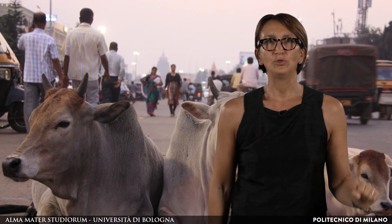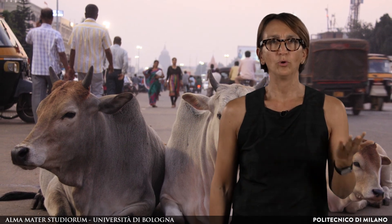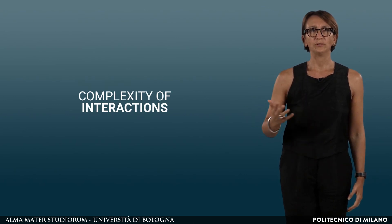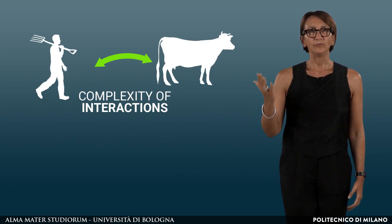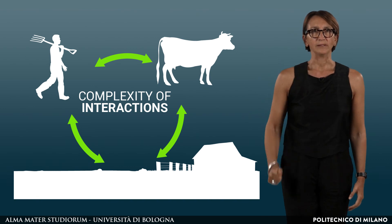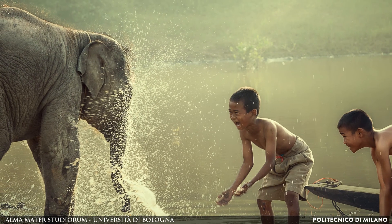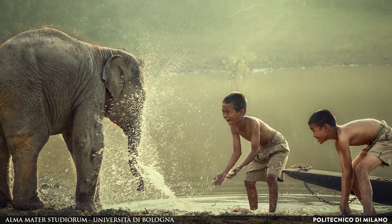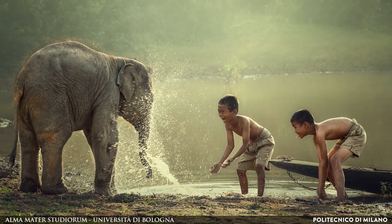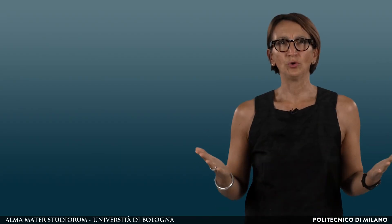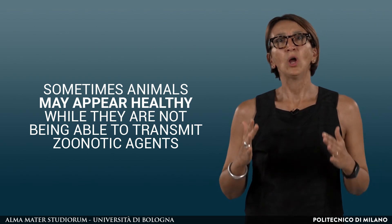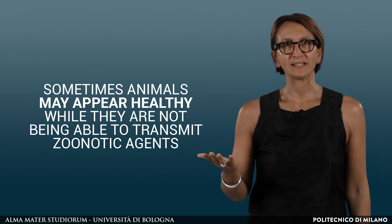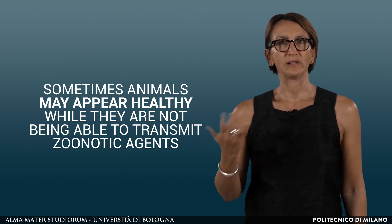People interact with animals during their everyday life, at home or outside, all over the world. There may be a complexity of interaction among humans, animals and the different environments they live in. This is particularly true in several developing countries where people live in close contact with domestic animals, pests and wildlife. It is important to know that sometimes animals may appear healthy while they are not, being able to transmit zoonotic agents that can make people sick or even cause their death.